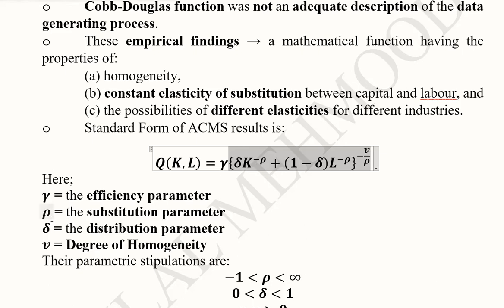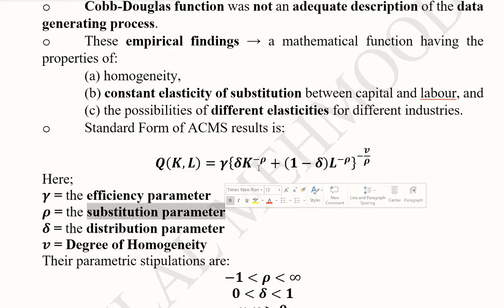Then we have ρ, which appears in three places. ρ is the substitution parameter, a pivotal parameter because quite a bit depends on it. It determines the elasticity of substitution.